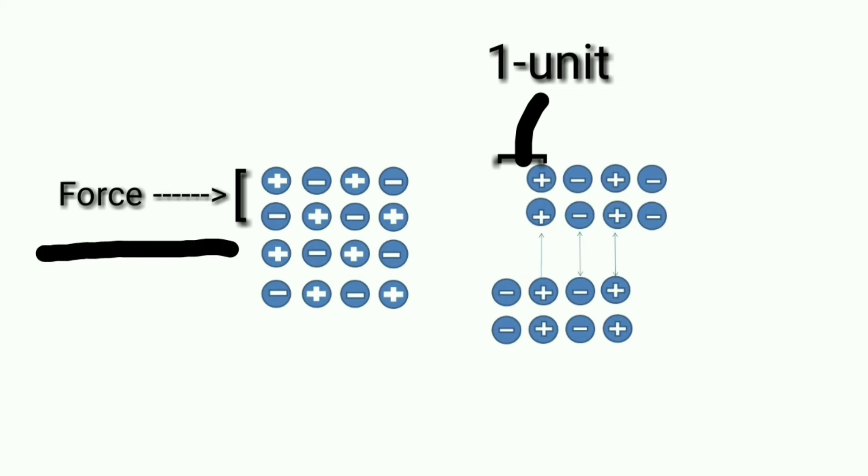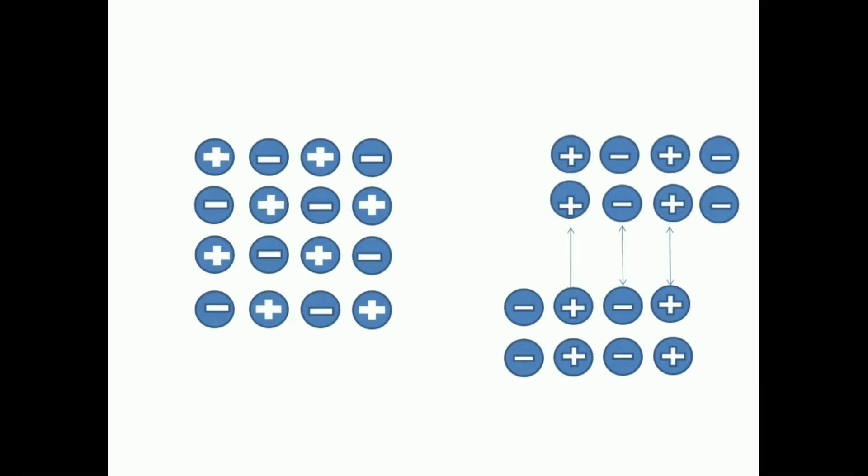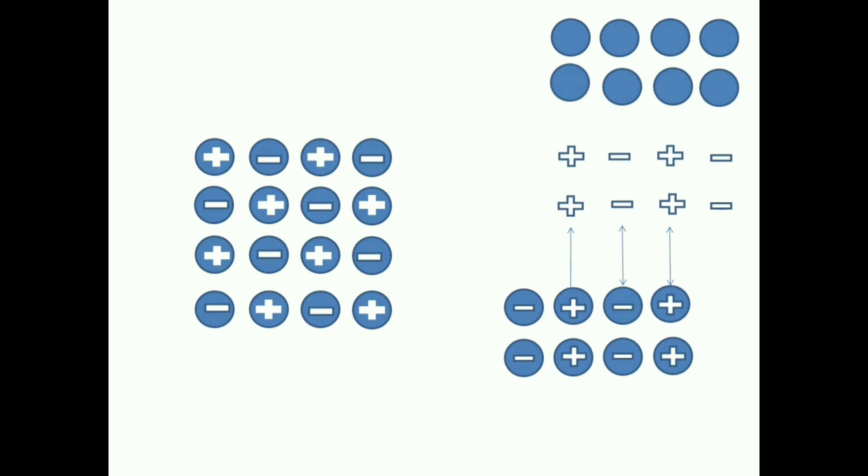And the same charges will come closer like the structure, and they create repulsion between them. This repulsion will break them. That is why ionic compounds are brittle.